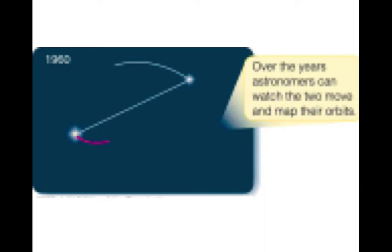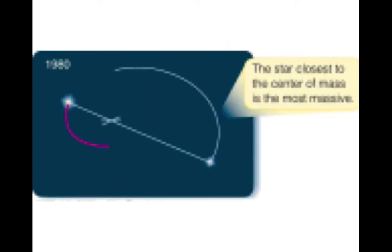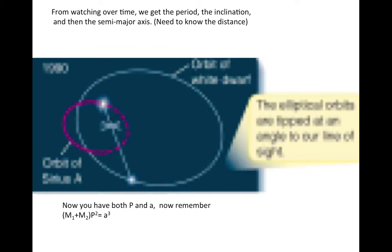Here's an example of an orbit. Over time, the two stars orbit their center of mass. You can measure the sizes of the two orbits, you can get the period. From the shape of the orbit, you can get the inclination and the semi-major axis. To get the semi-major axis, you have to know not only the angular size of the orbit, but the distance, which you have to measure by parallax.